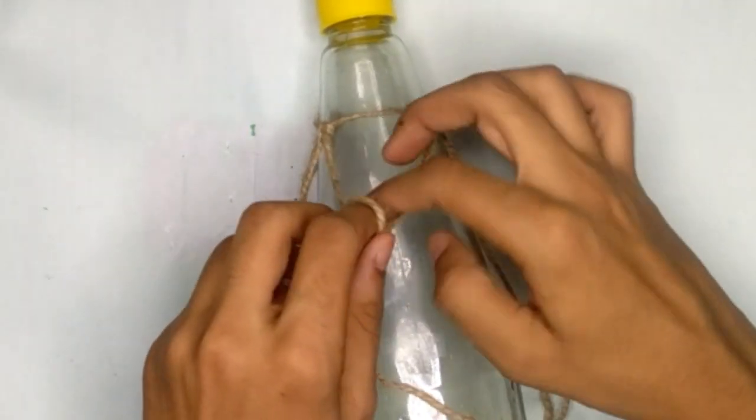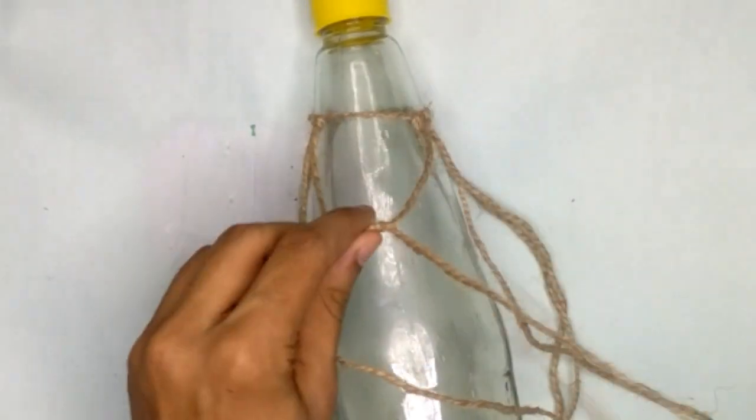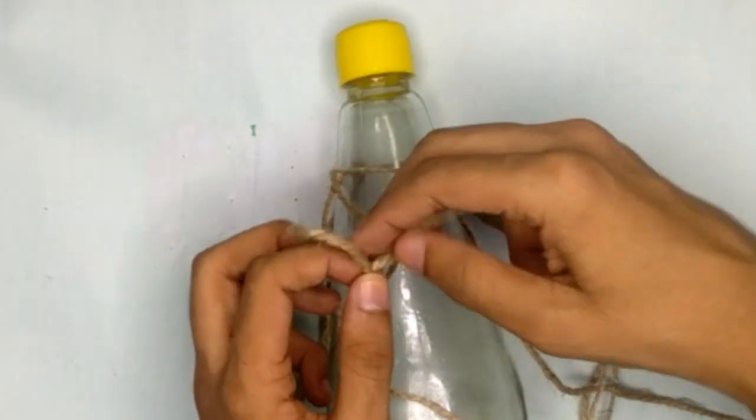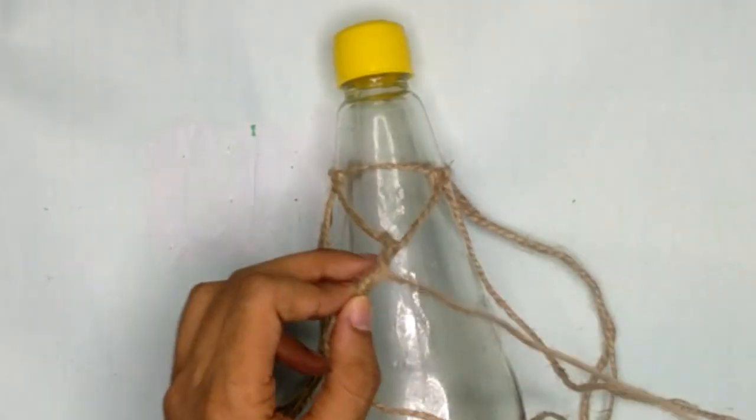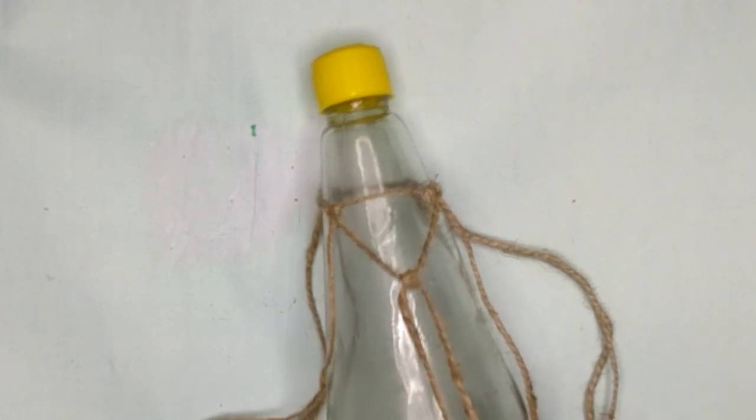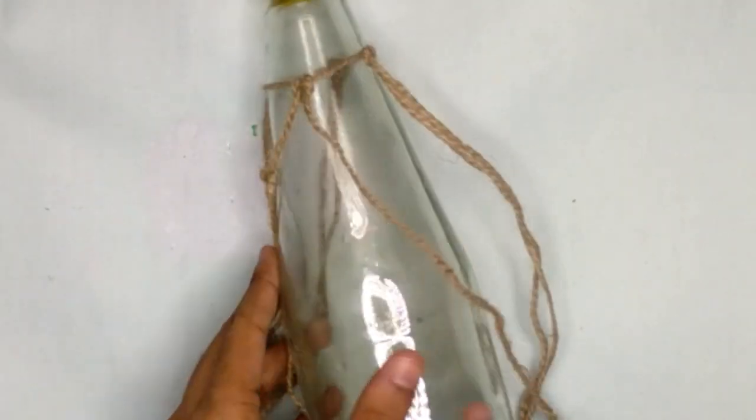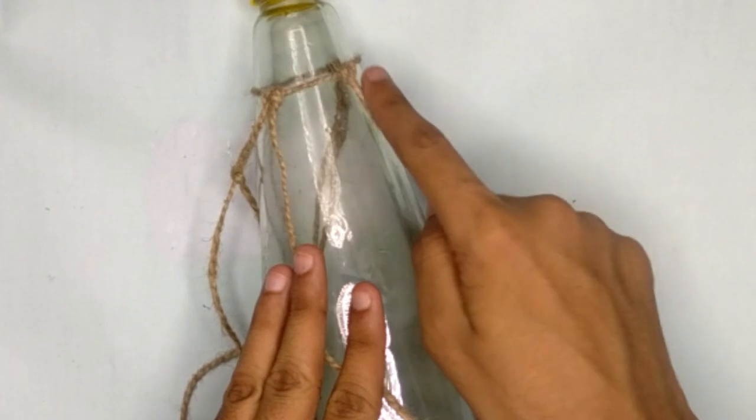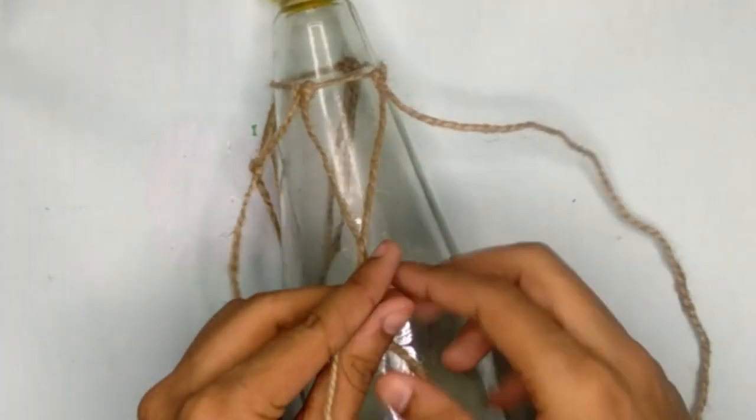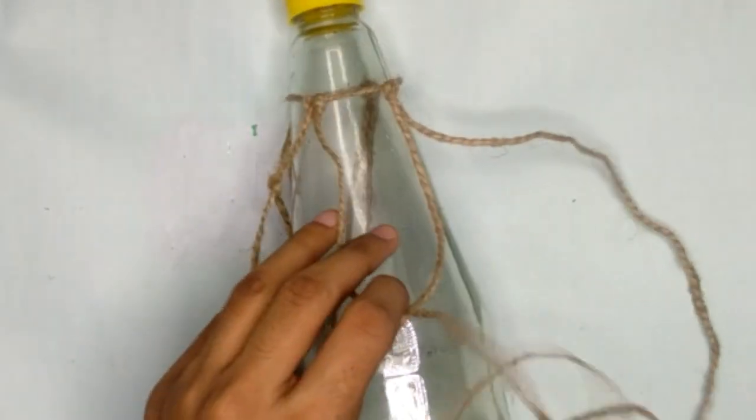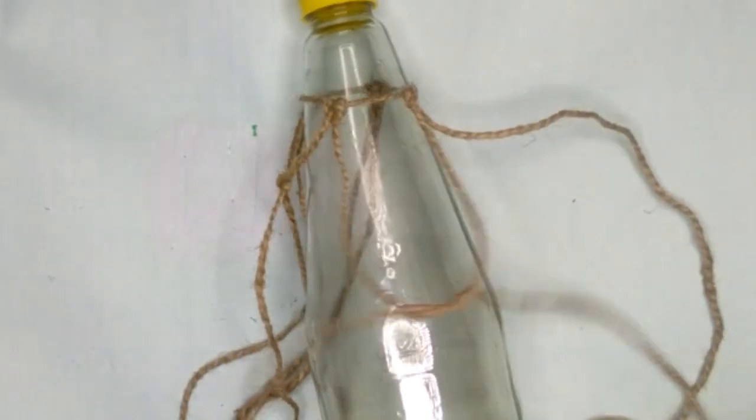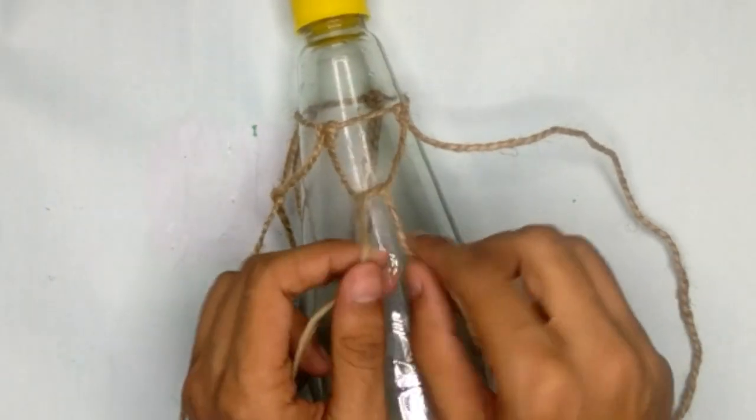If you're happy with the triangle, just go over and tie it once again. Moving forward, we will apply the same process. Just make sure you tie them tight enough.